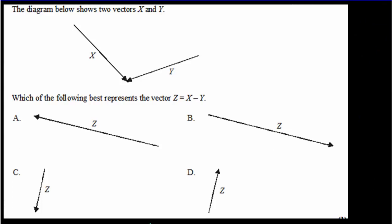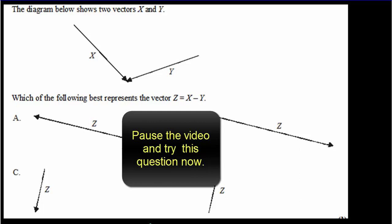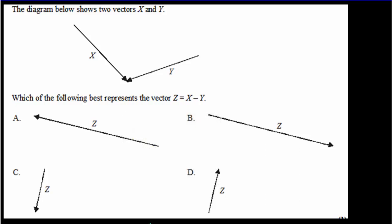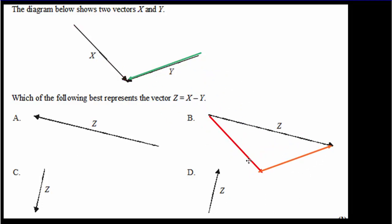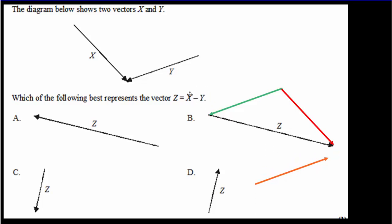I have a couple of IB questions for you. Pause the video, read the question, try it out for yourself, come back for the answer. We've got two vectors x and y — x is in red and y is in green. To find x minus y, I need to add the opposite of y. Here's the opposite of y. Adding the opposite of y to x gives answer b. Using the other method, I join y and x tail to tail, and the vector runs from the head of y to the head of x — the correct answer is b.